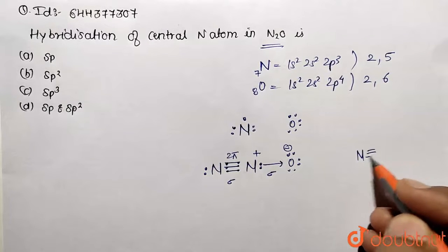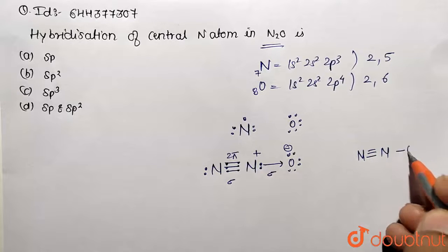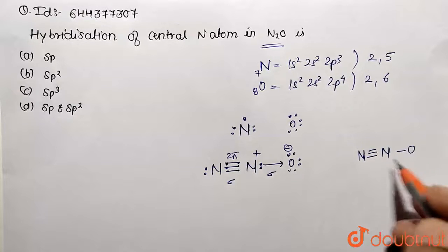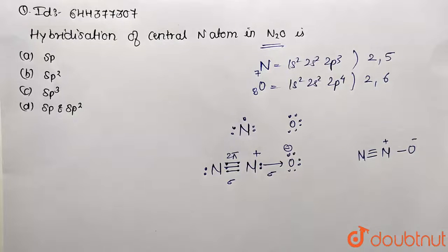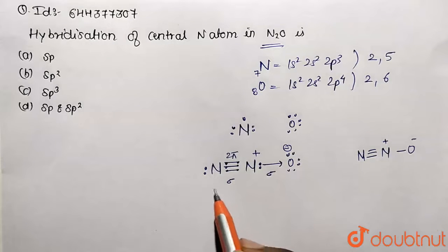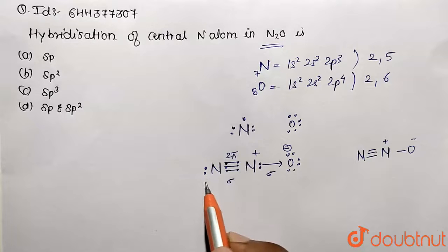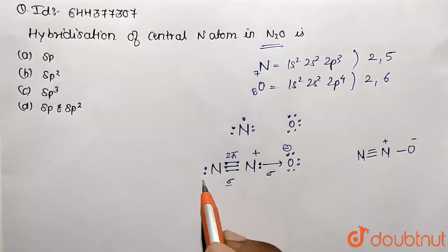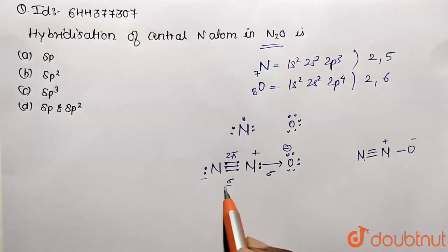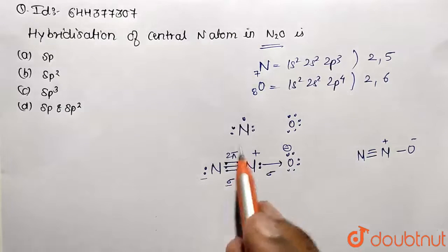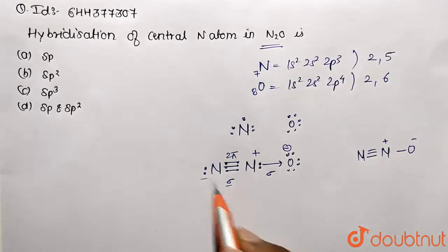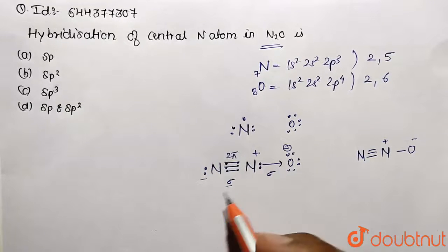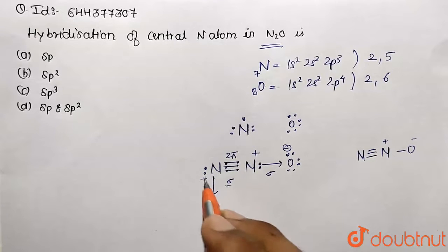The overall structure is N bonded to N bonded to O. Now we calculate hybridization by counting the number of orbitals required. For the central nitrogen, we have one sigma bond and one lone pair — that means two sets of orbitals are needed. Pi bonds involve sideways overlap via p orbitals and are not counted in hybridization.